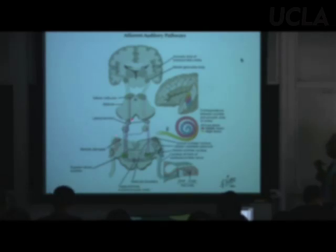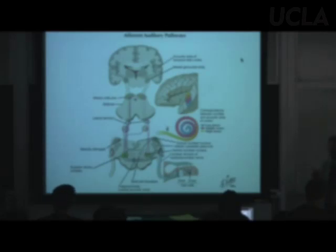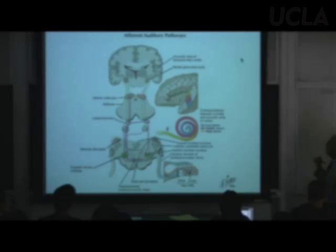The next synapse in this system is in the mesencephalon — specifically the inferior colliculus, which you all saw in lab. All of the auditory input is going to end up synapsing in one side or the other of the inferior colliculus.